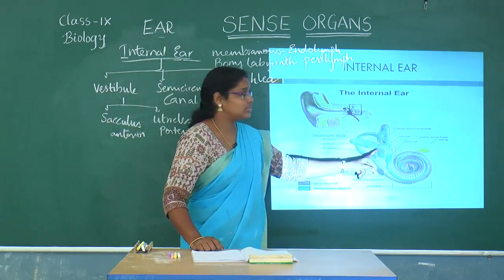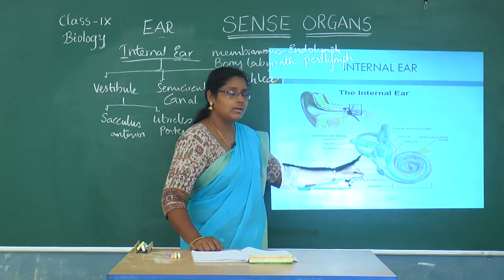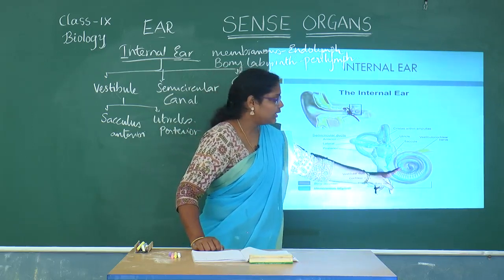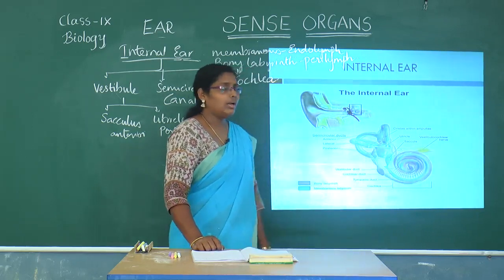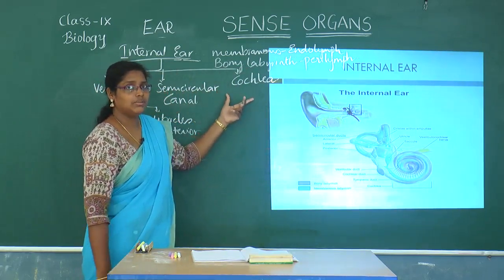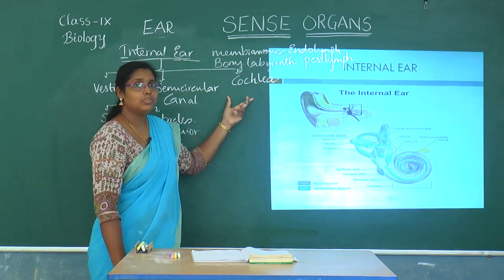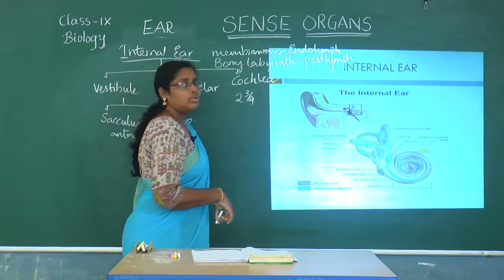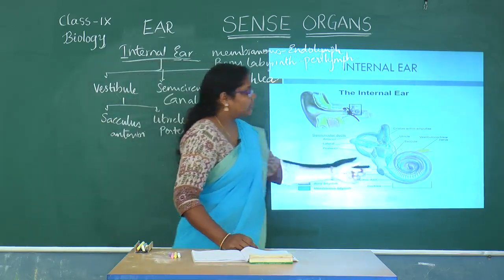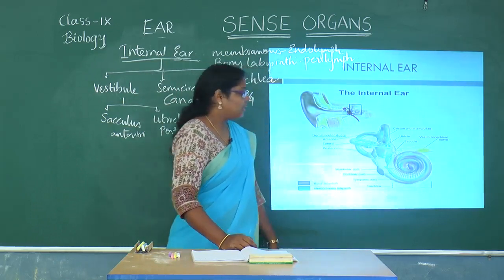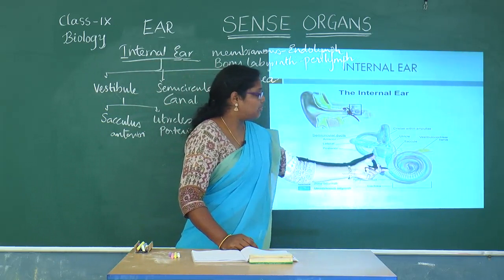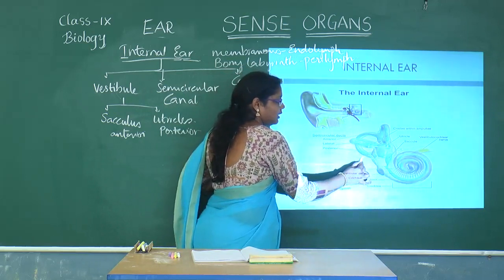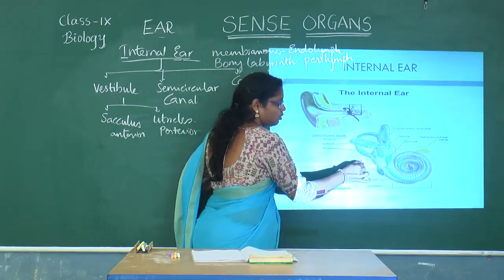The semicircular canals are present close to the vestibule, and on the opposite side is a spiral structure called the cochlea. The cochlea is spiral in shape, making approximately 2¾ turns. The cochlea is connected to the smallest bone called the stirrup, or stapes.